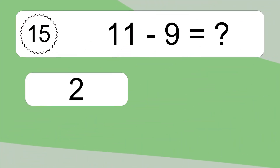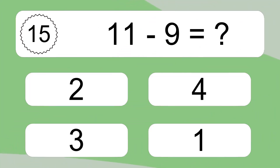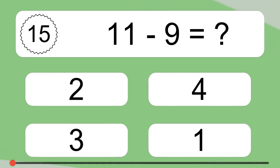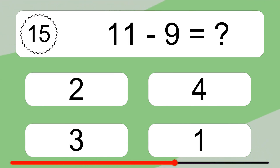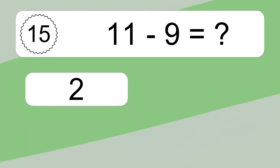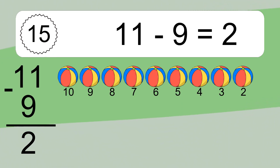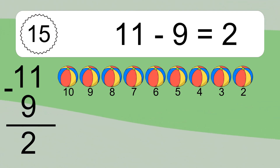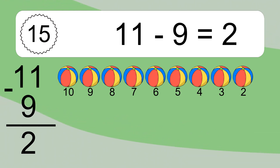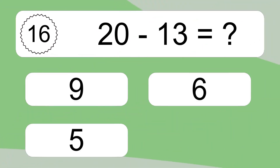11 minus 9 equals what? 11 minus 9 equals 2. Let's count it: 10, 9, 8, 7, 6, 5, 4, 3, 2.